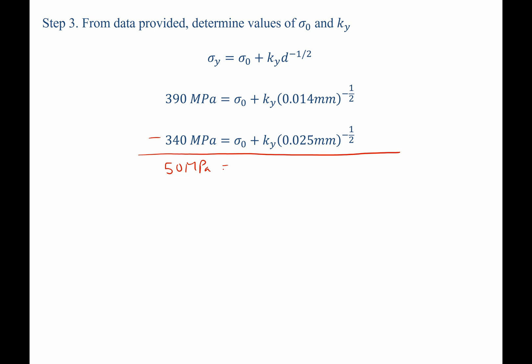This equals ky times 2.127 millimeters to the negative one-half power. If we divide both sides by 2.127 millimeters to the negative one-half power, we find that k-sub-y is equal to 23.51 megapascals times square root meters.